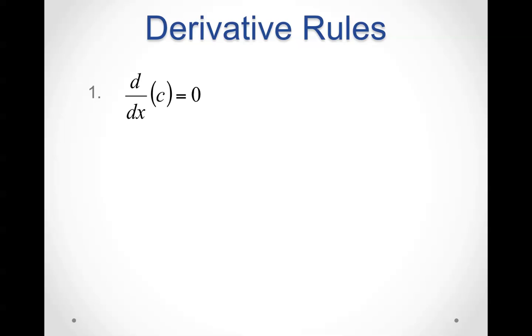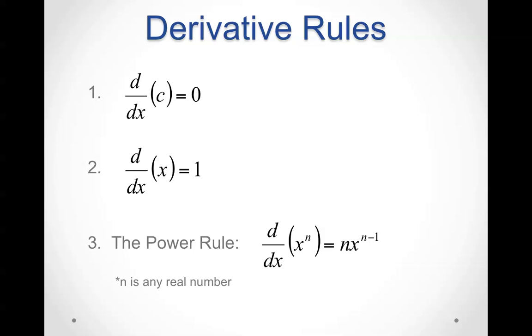Derivative rules. The derivative of a constant is 0. The derivative of x is 1 because the exponent to x is 1. And the power rule says the derivative of x to the n equals n times x raised to the n minus 1. n has to be a real number.